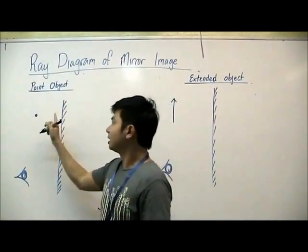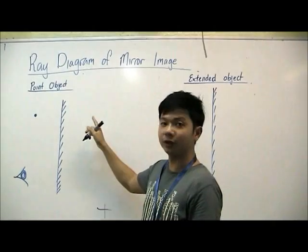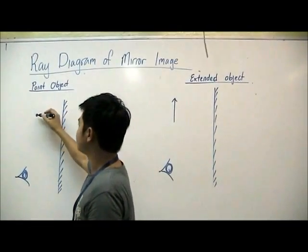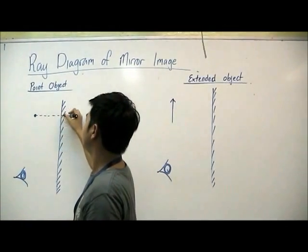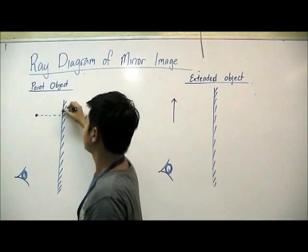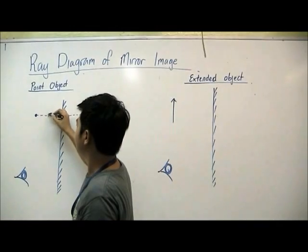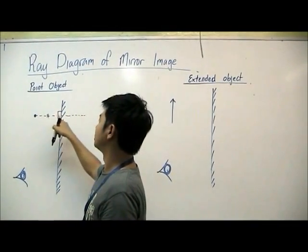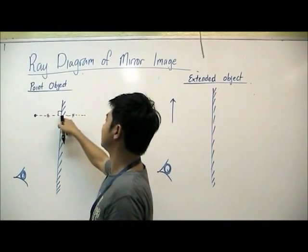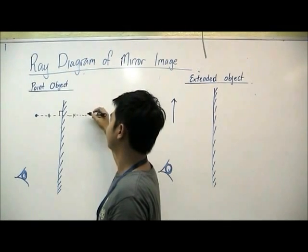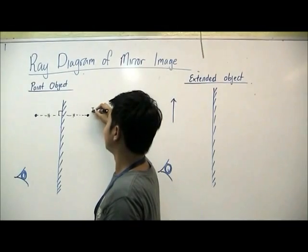Now let's look at the point object. The first step will be for us to draw the image. So how do we draw the image? From the point object, we draw a perpendicular line to the mirror. So that's 90 degrees here. And make sure that we find the distance between the object to the mirror. And we mark out the same distance from the mirror to the image. So this is our image.